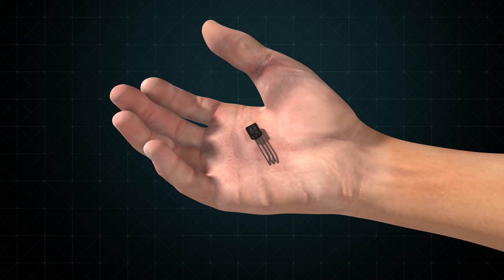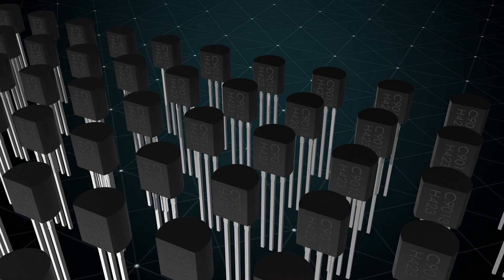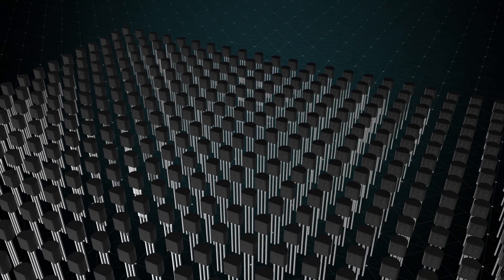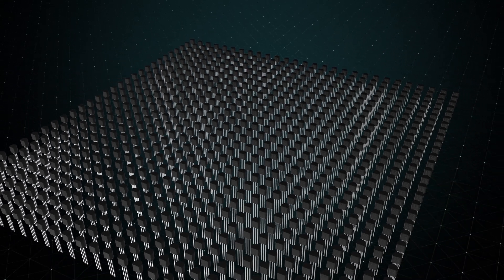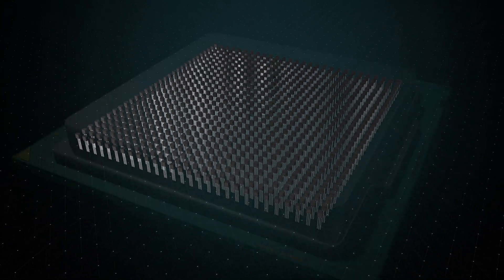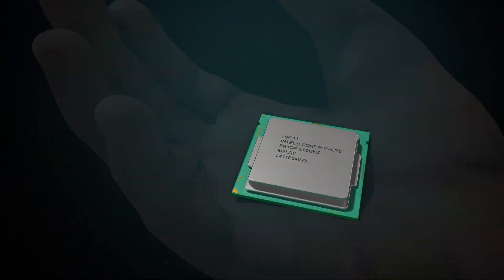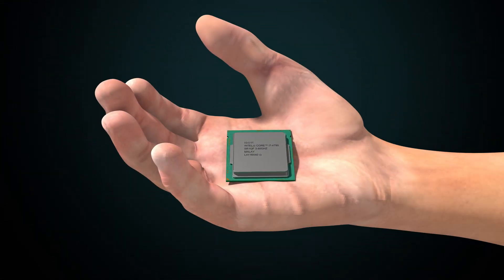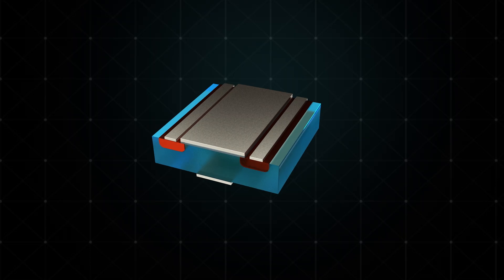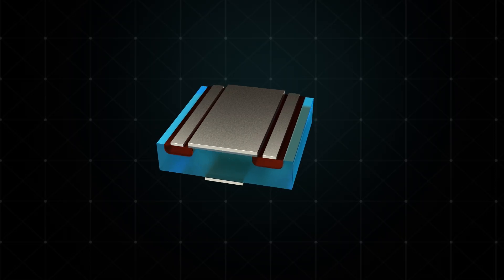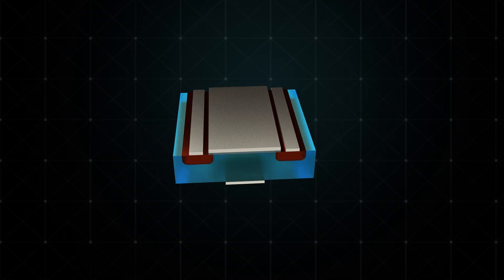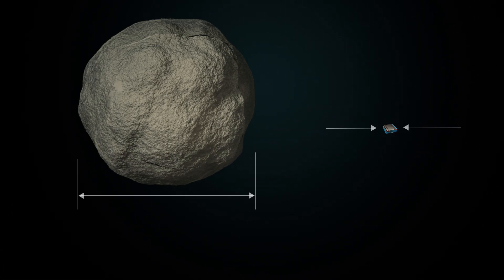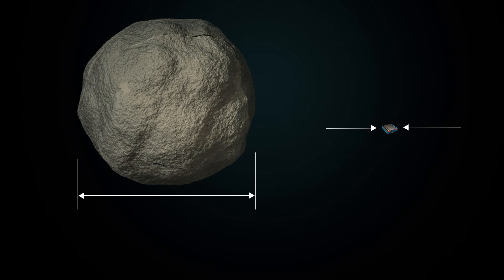Transistors are incredibly small. A CPU contains billions of transistors. It might seem impossible to fit billions of them into such a tiny CPU. However, CPUs use transistors called MOSFETs, which are much smaller than even fine dust particles.